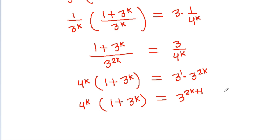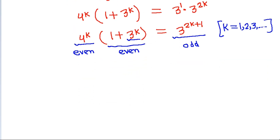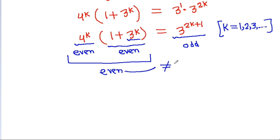For k = 1, 2, 3, and so on: 4^k is even, and 3^k is odd, so 1 + 3^k is even. Therefore the left side, even times even, is even. But 3^(2k+1) is odd. Even is not equal to odd, so this is not possible. Therefore x cannot be negative.